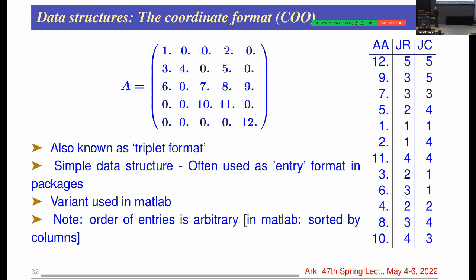Let's look at how sparse matrices are stored. The most basic format is the coordinate or triplet format, used by MATLAB: you store only the nonzero values together with their row and column indices. The nice thing is you can enter the triplets in any order — that's why it's used as an entry format in packages.